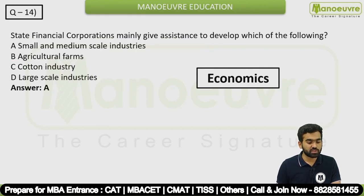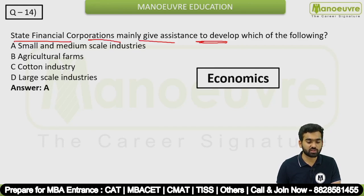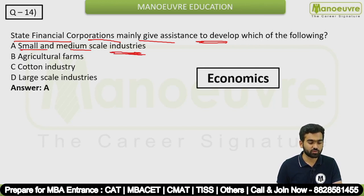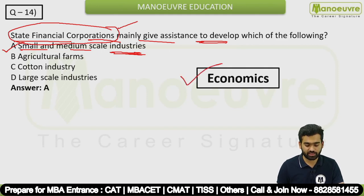Question 14: State Financial Corporations mainly give assistance to develop which of the following? The answer is small and medium scale industries. This is an economics-related question.